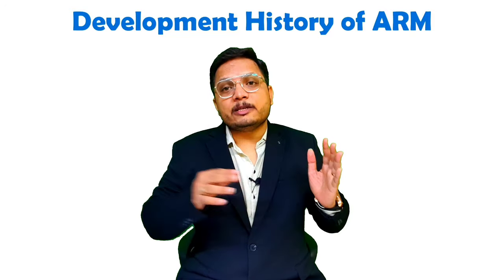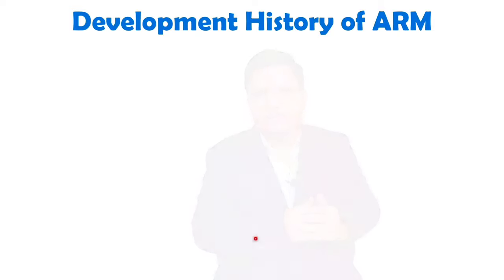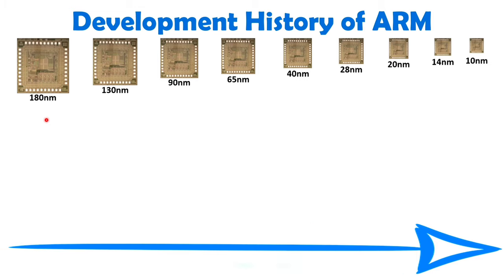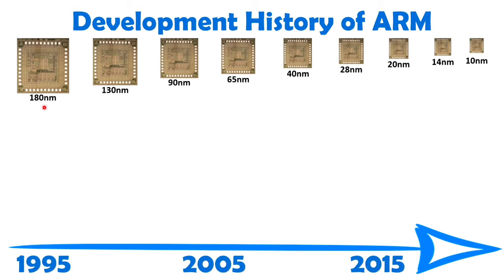The CPU core has been upgraded over time with respect to different instruction sets and versions. Initially they were using 180 nanometer technology, and over time they upgraded, and right now in 2022 they are using 5 nanometer technology — though the slide shown covers up to 2015 only.